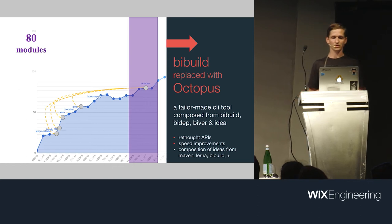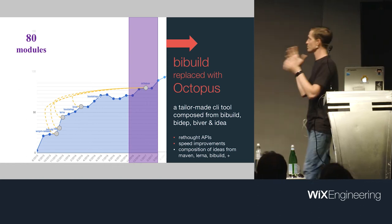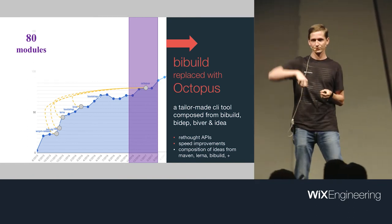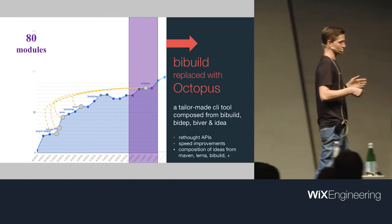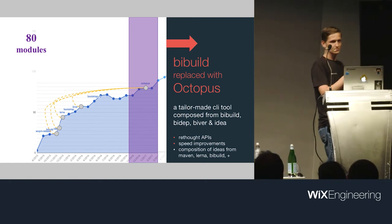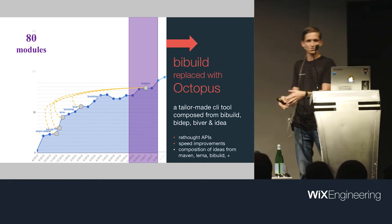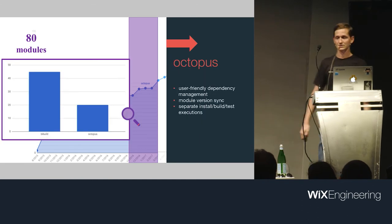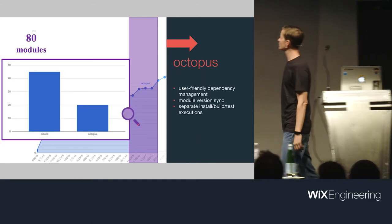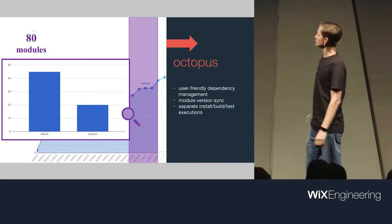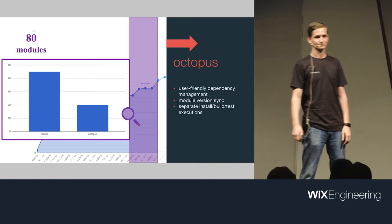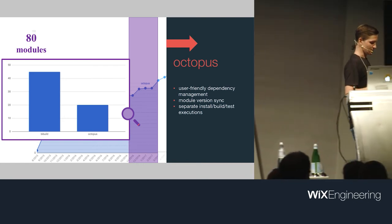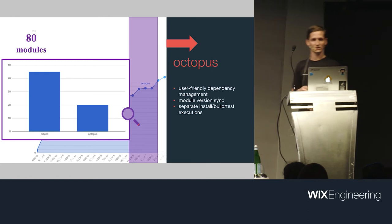I replaced BBuild with Octopus, taking ideas from Maven, Lerna, and BBuild, and some code from BBuild as well. I consolidated all the tools — version management, IntelliJ project generation — into basically a CLI tool. It solved the pain and took the build time down to around 20 minutes, so I was okay with it again.